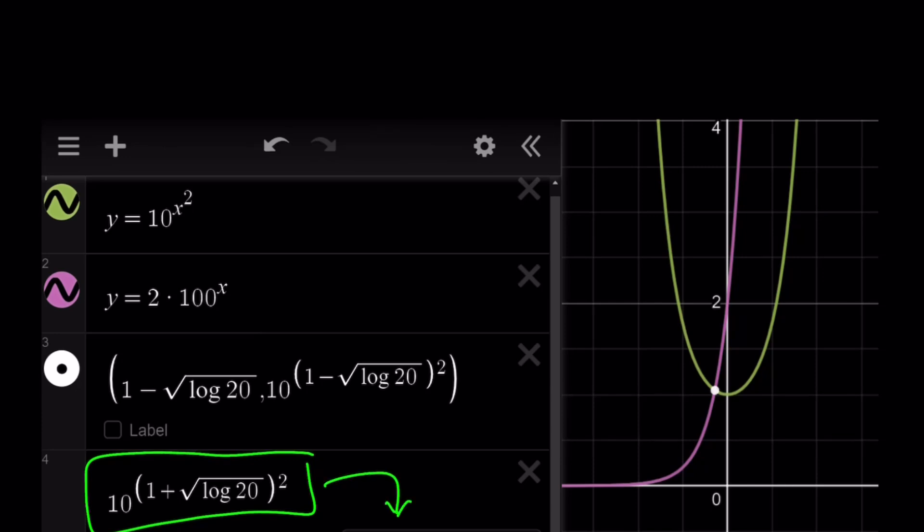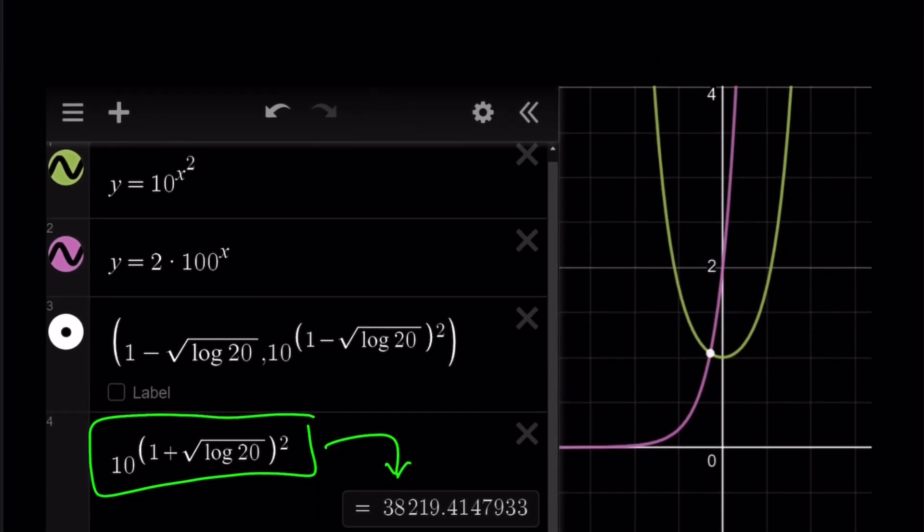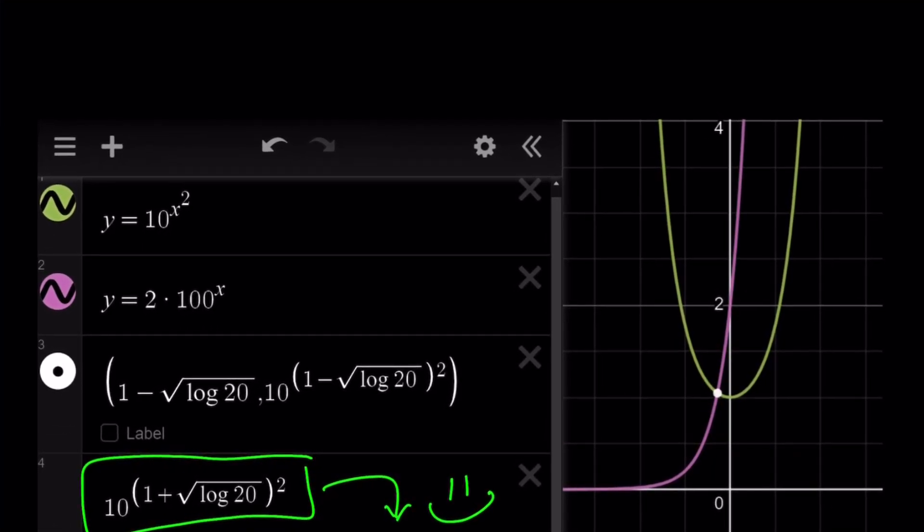That's why I wanted to show you what the y value is going to look like for the second. Remember we were talking about two x values when we solved the equation. And the first one, the big one, the 1 plus square root of log 20, is going to give you this y value here which is going to be way too large. Think about it. It's about 38,000. And this brings us to the end of this video.